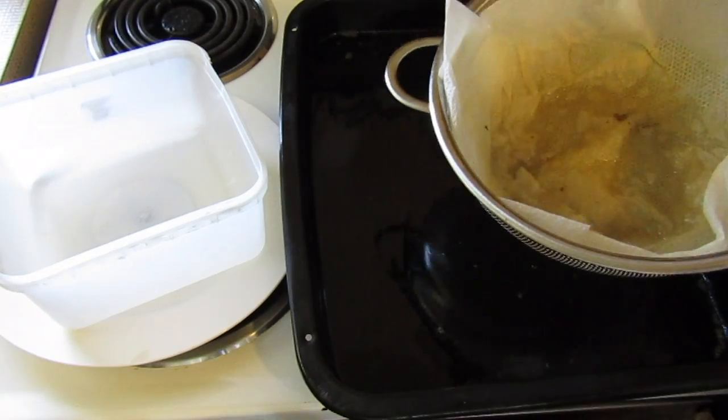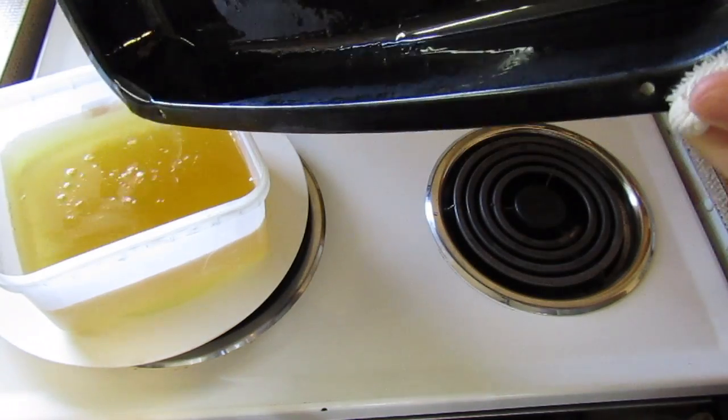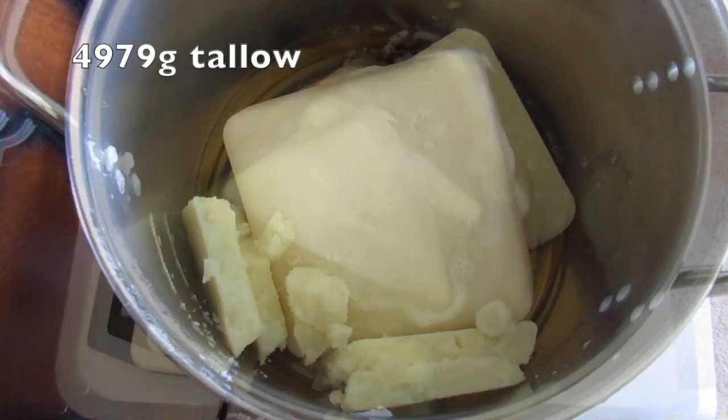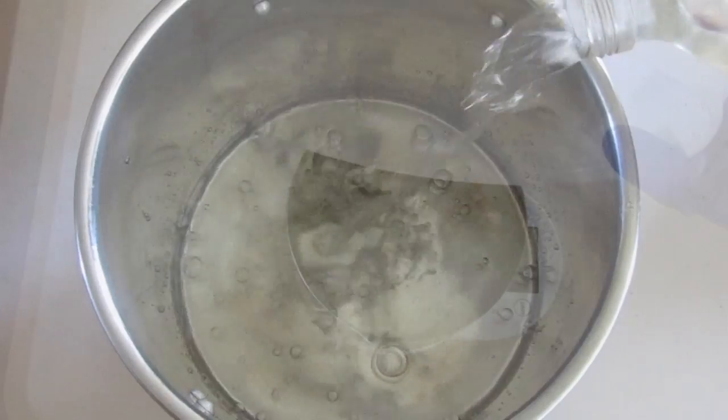Once it had all melted through, I put it into the freezer until I'd collected enough to make my largest batch of soap yet. Over time I collected almost five kilograms of sheep tallow and calculated a recipe with three percent super fat.